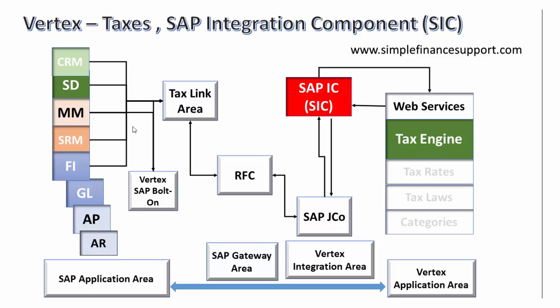In future discussions, we will go into more detail about how different components work and how configuration is triggered. We'll show how Vertex is configured, its different levels of information in the Vertex engine. Configuring the tax engine requires both tax knowledge and technical knowledge. The same kinds of taxes available in SAP — whether international, US, Canada, or Europe — are also available in Vertex. Vertex now has both an international version and a US and Canada version.